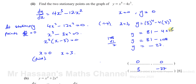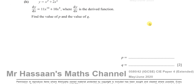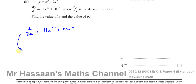So there we have the two stationary points of y equals x to the power of 4 minus 4x cubed. For part B, y equals x to the power of p plus 2x to the power of q, and dy/dx is 11x to the power of 10 plus 10x to the power of 4. Find the value of p and the value of q. We've got to think backwards here. We know dy/dx and need to figure out how to get back to y.